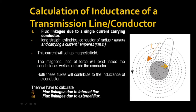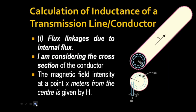We have to calculate flux linkages due to the internal flux and flux linkages due to the external flux. To calculate the flux linkages due to the internal flux, I am considering the cross-section of the conductor. The magnetic field intensity at a point x meters from the center is given by H.